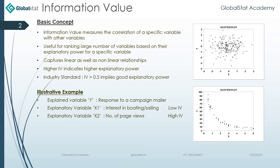So why do we say higher IV is better? Because Weight of Evidence and Information Value are simple yet powerful techniques to perform variable transformation and selection. These concepts have a huge connection with logistic regression modeling. It is widely used in credit scoring to measure the separation of the good customer versus the bad customer.